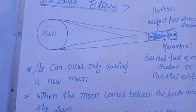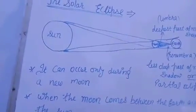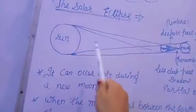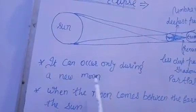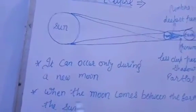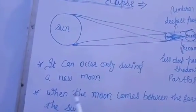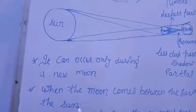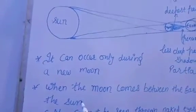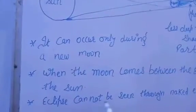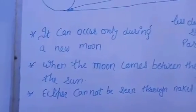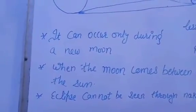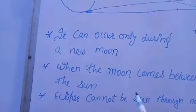And the next point is it occurs only on new moon day. That means solar eclipse can occur only during a new moon day. And here I will write the definition. This is the definition: when the moon comes between the earth and the sun, this is the solar eclipse. And of course, eclipse cannot be seen through the naked eyes. So this is the solar eclipse.